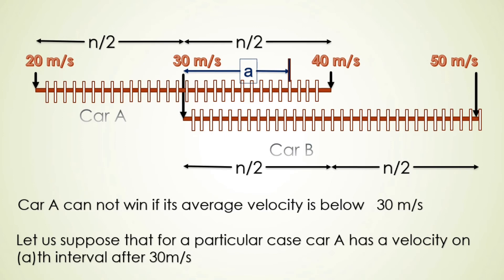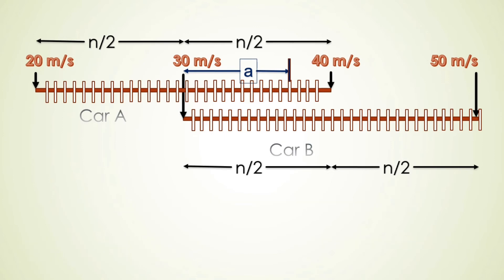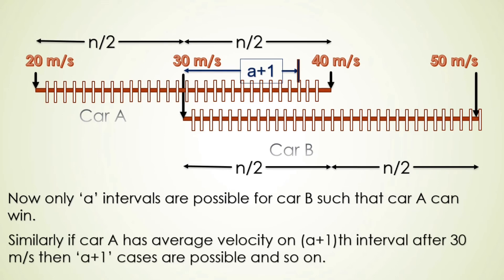If Car A is moving with 30 m/s, then there is no chance that A can win. If it is in the first interval after 30 m/s, then only one case is possible. If it is in the second interval after 30 m/s, then only two cases are possible. If it is in the third interval then three, fourth interval then four, and so on.